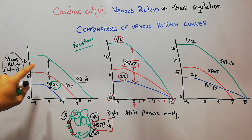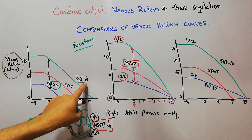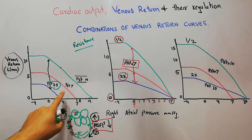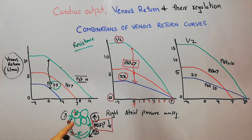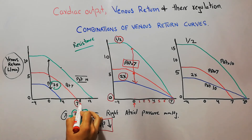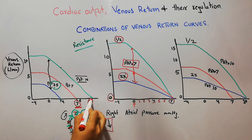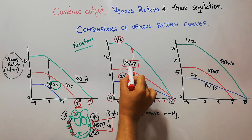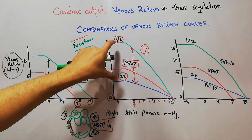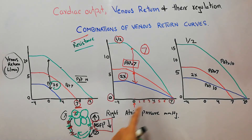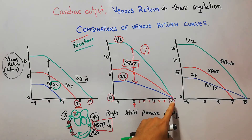In the previous graph, the mean systemic filling pressure was increased, kept normal, then decreased. So when mean systemic filling pressure was increased, the right atrial pressure had to go above seven — reaching 12 or 13. But in the resistance graph, mean systemic filling pressure was kept at seven and only resistance was increased or decreased. So venous return becomes zero when right atrial pressure touches seven mmHg.